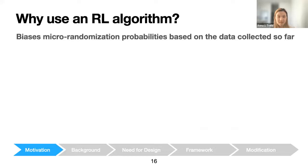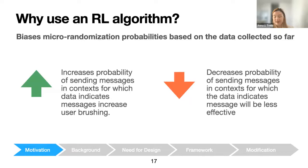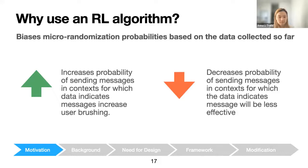A second reason is that the algorithm will learn through data and bias micro-randomized probabilities. As the RL algorithm collects data and learns, at each decision time it will increase the probability of sending a message for contexts where data indicates a message will increase user brushing. Conversely, it will decrease the probability for contexts where data indicates a message will be less effective — which is increasingly important to avoid burdening or annoying the user.